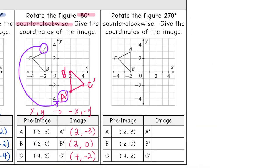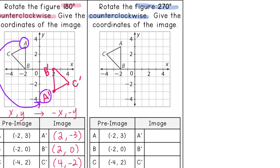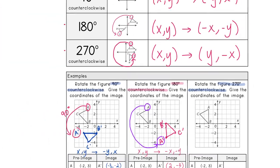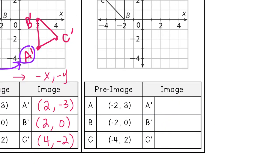And the third example. Rotate the figure 270 degrees counterclockwise. Give the coordinates of the image. So I'm going to go back to my notes up here. For 270, they switch places and the x value is negative. So the rule is (x, y) goes to (y, -x).